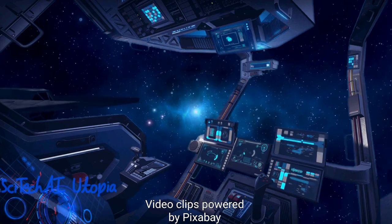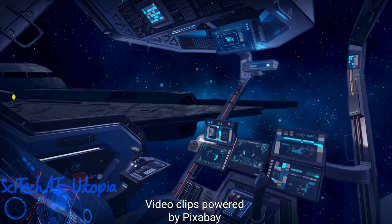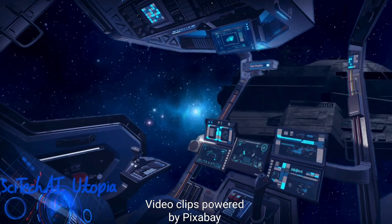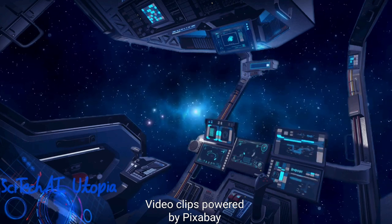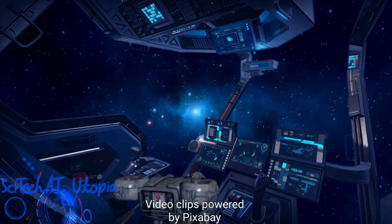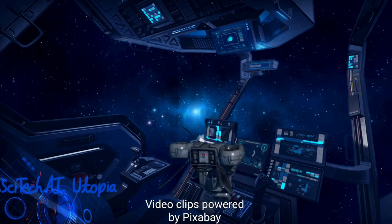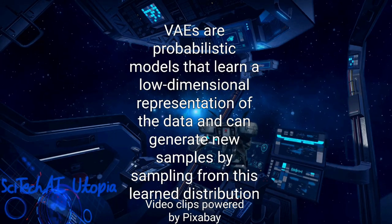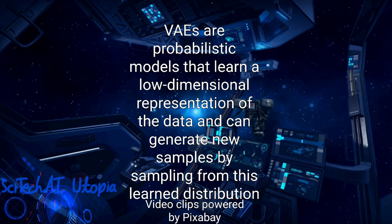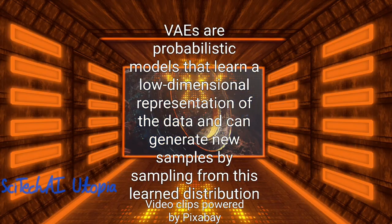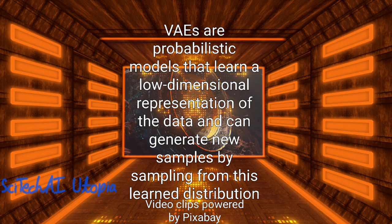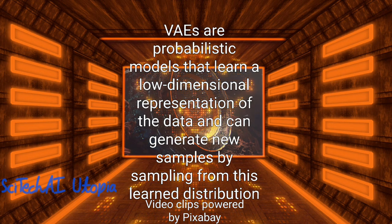Generative models are at the heart of Generative AI. These models are designed to capture the underlying data distribution and use it to generate new, previously unseen data. Generative models include variational autoencoders and generative adversarial networks. Variational autoencoders, or VAEs, are probabilistic generative models that capture the essential features of data and create a low-dimensional representation known as latent space.